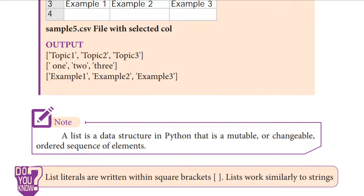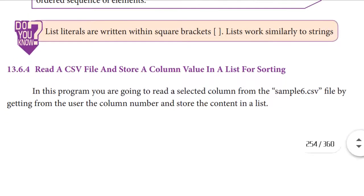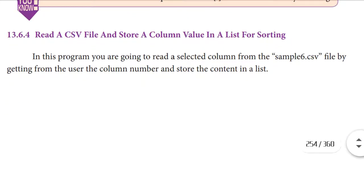Python's list is a mutable or changeable ordered sequence of elements — the elements in a list can be changed at any time. We have the data in order, so we have an ordered sequence of elements in the list. List literals are written within square brackets. It is similar to strings also. Next, we are going to read a CSV file and store the column values in a list for sorting.